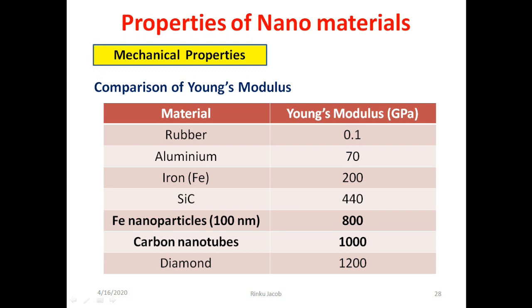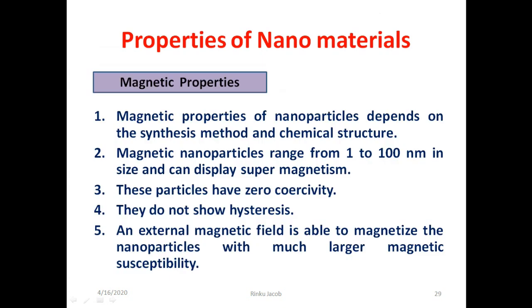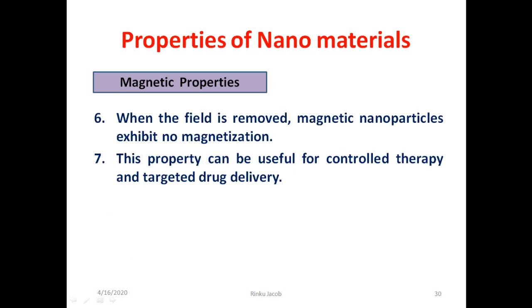The magnetic properties of nanomaterials depend on the synthesis method and chemical structure. Magnetic nanoparticles ranging from 1 to 100 nanometers can display supermagnetism. They have zero coercivity, so they do not show hysteresis. An external magnetic field can magnetize the nanoparticles with much larger magnetic susceptibility. When the external field is removed, magnetic nanoparticles lose their magnetic behavior, exhibiting no magnetization. This property can be used for controlled therapy and targeted drug delivery.